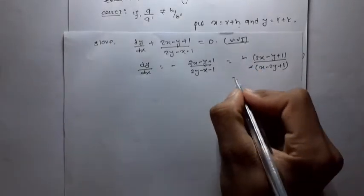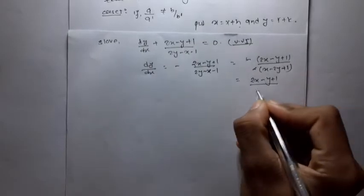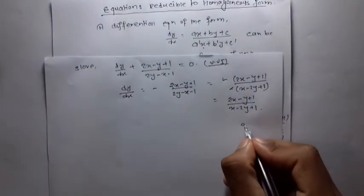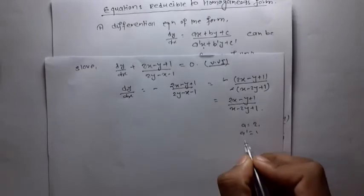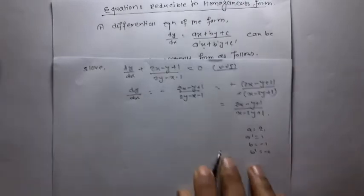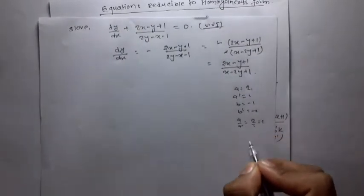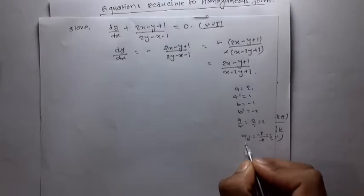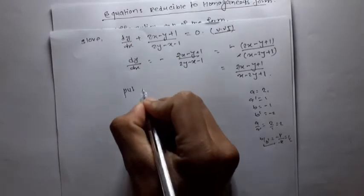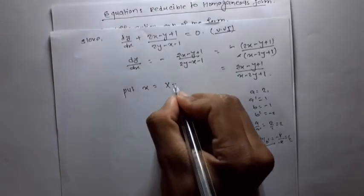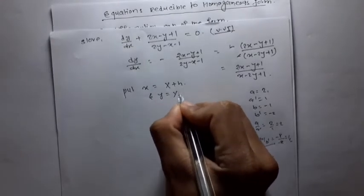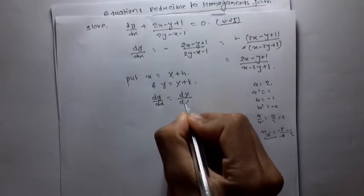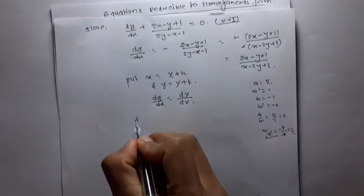Consider the equation dy/dx = (2x - y + 1)/(x - 2y + 1). Here a = 2, b = -1, a' = 1, b' = -2. Now a/a' = 2/1 = 2 and b/b' = (-1)/(-2) = 1/2. Since a/a' ≠ b/b', this is Case 1. So we put x = X + h and y = Y + k.